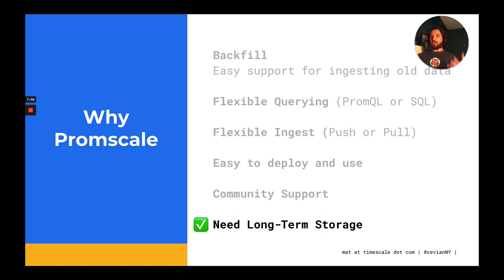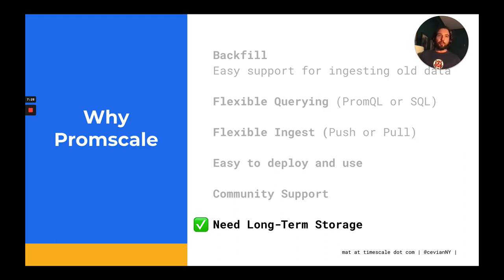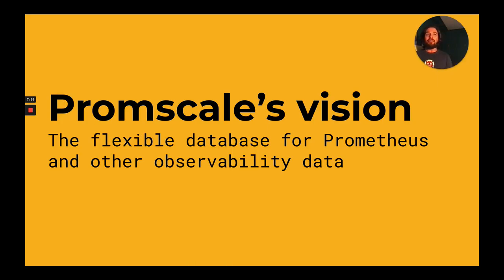Now, I'd like to stop and explain why I think this is a good use case to think about. The main reason is that it shows that Prometheus and its data format and PromQL form a good basis for these hybrid systems, which combine different metrics together for analysis and reporting. And this ties in very well with PromScale's vision, which is to be the flexible database for Prometheus and other observability data.